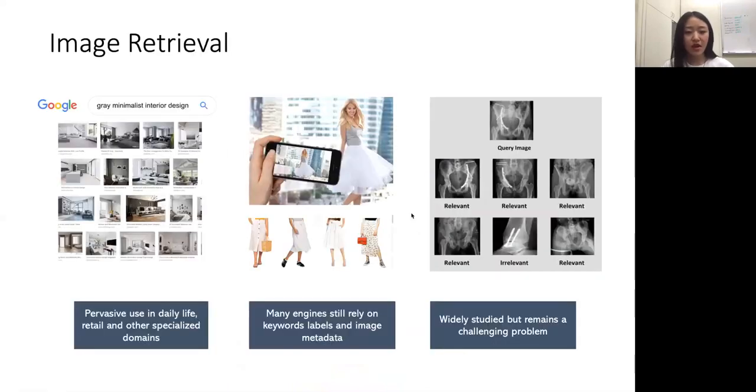So in this talk, we focus on the topic of image retrieval and why we are interested in this. Image retrieval or image search systems are very pervasive in our daily lives, ranging from retail to specialized domains such as medical image analysis. Even though image retrieval has been intensely studied in information retrieval and computer vision, many commercial systems are still heavily relying on keyword labels or image metadata because image retrieval is actually a very challenging problem.